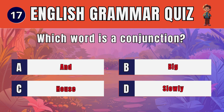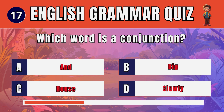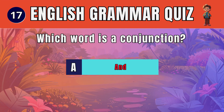Question 17. Which word is a conjunction? The answer is: A. And.